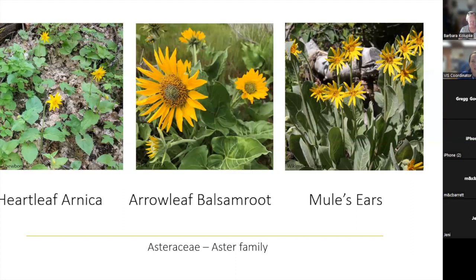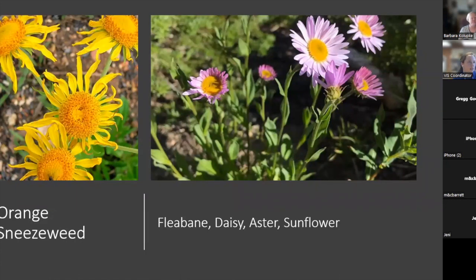We have more asters — orange sneezeweed on the left has slightly more wiggly petals, and there's a purple one that I'm not entirely sure about — some sort of aster or fleabane. As I said, they're incredibly difficult to tell apart; you've got to look at leaf shape, size, flower height, which can vary with elevation. But I can tell you it's in the aster family.